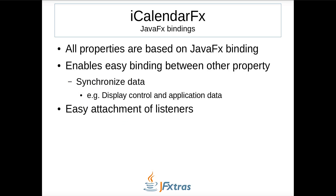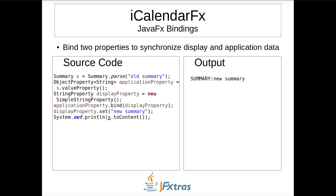All properties are based on JavaFX properties. JavaFX properties make it easy to bind two properties together to synchronize data, such as between a display control and application data. JavaFX properties also enable the easy attachment of listeners, another useful feature when developing graphical controls. This example shows how bindings can be used to synchronize data. I mocked application data by a summary property and created a string property to mock the display data from a JavaFX display control. Next, I bind the application data to the display data. When the display property is changed, the application data is automatically updated. In the output, you see the summary has changed to 'new summary', indicating the binding worked.